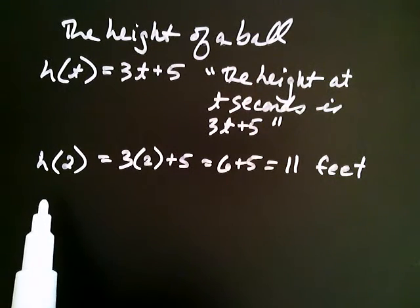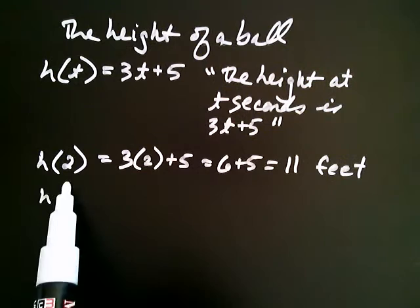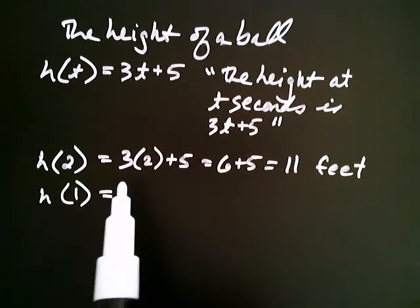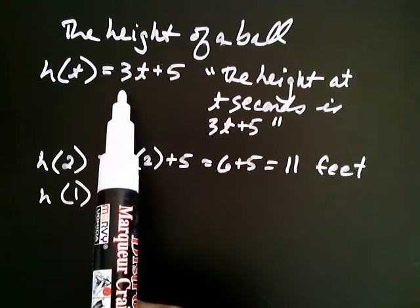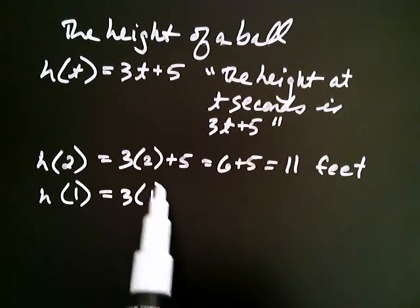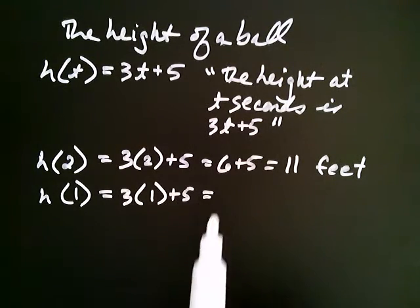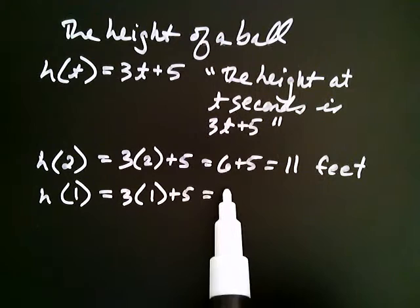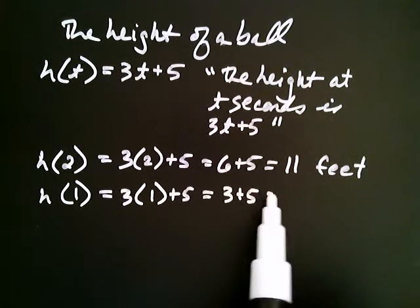Let's take another one. H, that is the height, at 1 second. What would that be? Well, according to my little set of instructions here, it would be 3 times the 1 second. So 3 times 1 plus 5, which is equal to 3 plus 5 is 8.